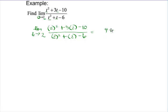The substitution theorem says just plug that value in and see what's going on. Well, 2 squared is 4. 3 times 2 is 6. Copy down my minus 10. In the denominator, 2 squared is 4 plus 2 minus 6. This cleans up to 0 over 0. Oops.